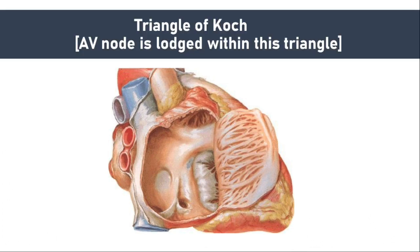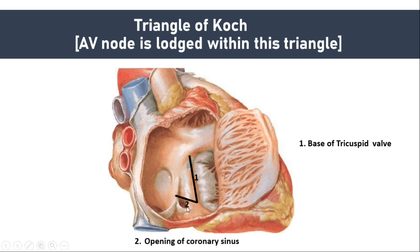Now we will see a very important triangle known as the triangle of Koch. This triangle is important because you will see the location of the AV node inside it. The boundaries of the triangle of Koch are: anteriorly, the base of the tricuspid valve; inferiorly, the opening of the coronary sinus; and posteriorly, the tendon of Todaro, which is a subendocardial ridge. These are the three boundaries, and the AV node is located inside this triangle.